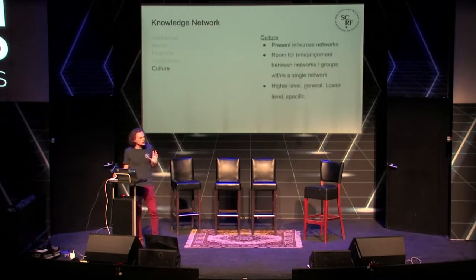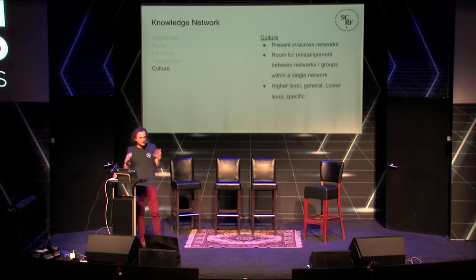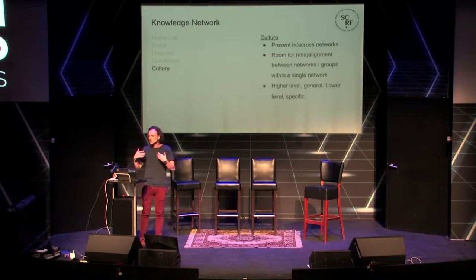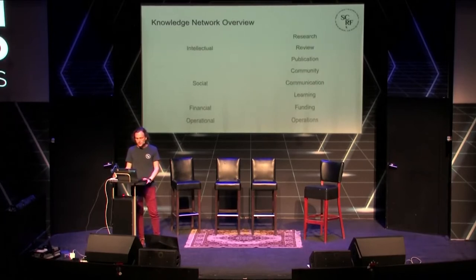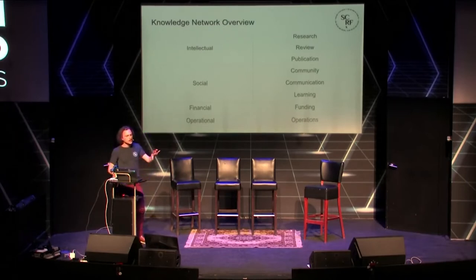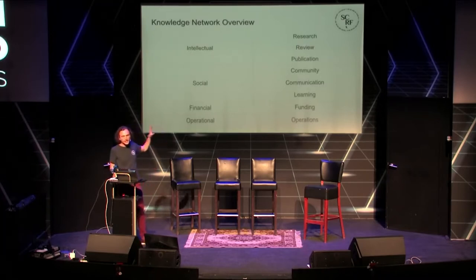Culture is not a network itself, but there's no kind of network with humans that cannot have culture — humans inherently bring culture to the table. When humans get together, inevitable cultures form. So it's very important to think about where there's room for potential misalignment. This is just an overview of the knowledge network stack: intellectual, social, financial, and operational, with appropriate network layers under each one. This is what I'm dubbing a knowledge network overall — this combination of all these different networks coming together in a focused topic area.